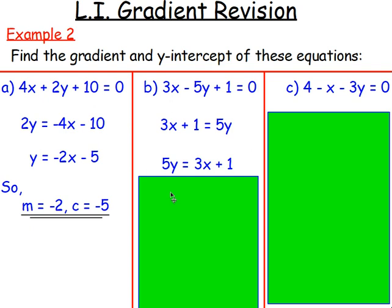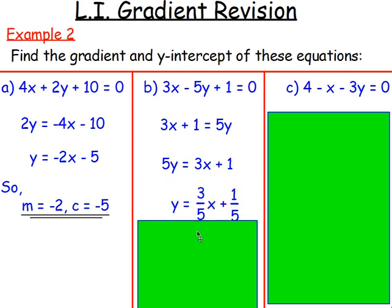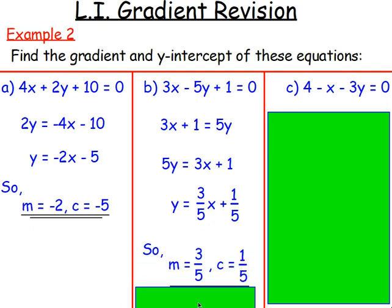I don't want 5y equals, I just want y equals, so divide every term by 5. Three divided by 5 will stay as three fifths, and 1 divided by 5 will stay as one fifth. You can now read off the gradient and y-intercept: m equals three fifths, and the y-intercept is one fifth — it is positive.